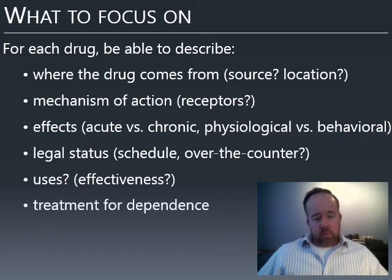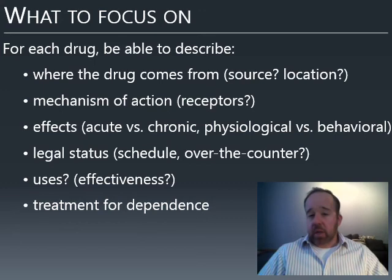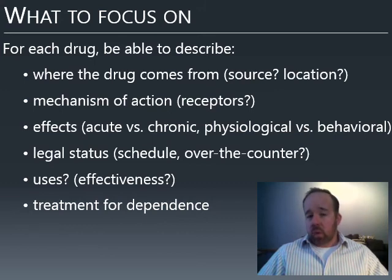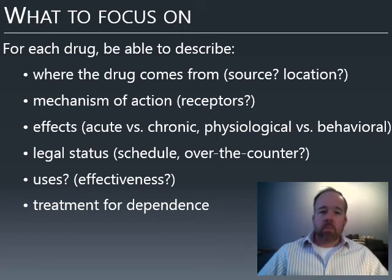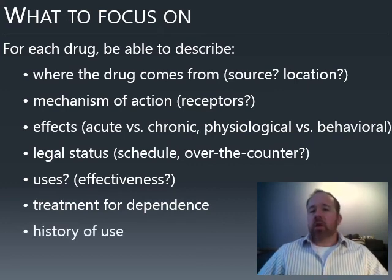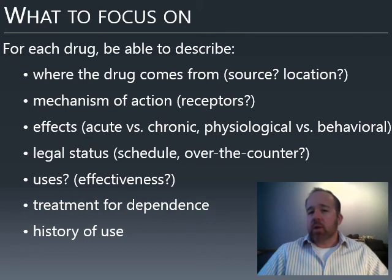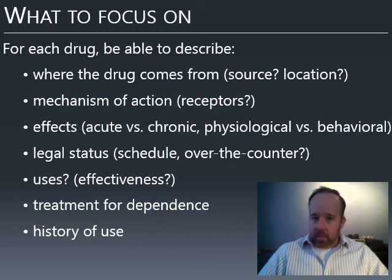If a person becomes dependent, what is the treatment? Is it agonist therapy — for example, a nicotine patch? For alcohol withdrawal, what do you use to wean someone off alcohol? What do you do for opioids? These have also been topics of discussion questions — what the medical implications are for treating dependence. Also know the history of use: especially for naturally occurring substances, the forms in which the drug has been taken.